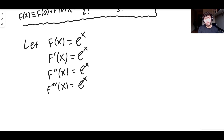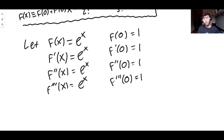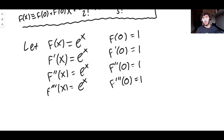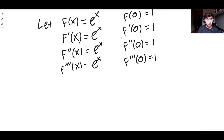So essentially what we get is that f of zero is just e to the zero — substitute x equals zero — and e to the power of zero is just one. f prime of zero is e to the zero again, so it's just one. f double prime of zero is one, f triple prime of zero is one, and this goes on forever. That's why I'm saying it's probably the easiest one to do, because it's just ones forever.